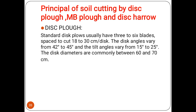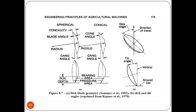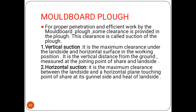Regarding the principle of soil cutting: for the standard disk plow, it usually has three to six blades spaced to cut 20 to 30 centimeters per disk. The disk angle varies from 40 to 45 degrees and the tilt angle varies from 15 to 25 degrees. The disk diameter is commonly between 60 to 70 centimeters. This diagram shows the disk angle and tilt angle.